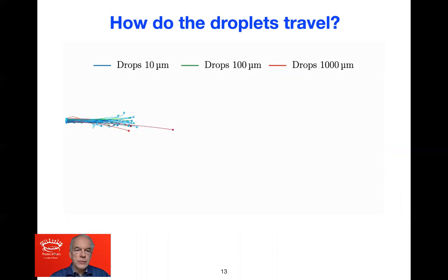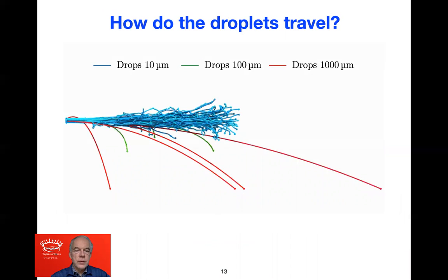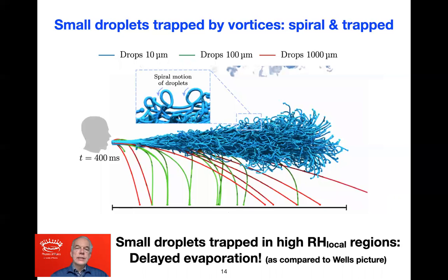You see three types of droplets: 10 micrometer, 100 micrometer, and 1,000 micrometer. The large droplets fall to the ground and indeed behave ballistically, whereas the small droplets are trapped in vortices. These vortices, where the local relative humidity is very high, protect those droplets from evaporation. You therefore have strongly delayed evaporation compared to the Wells picture.